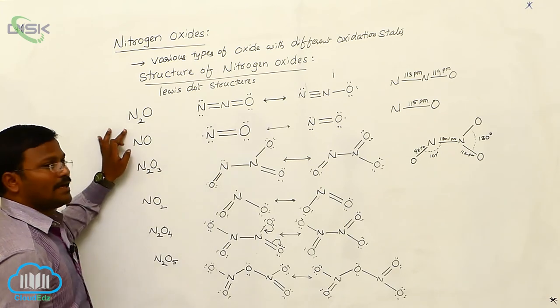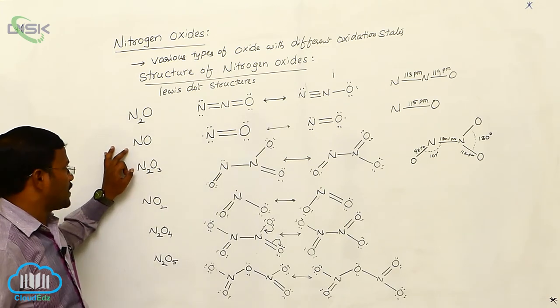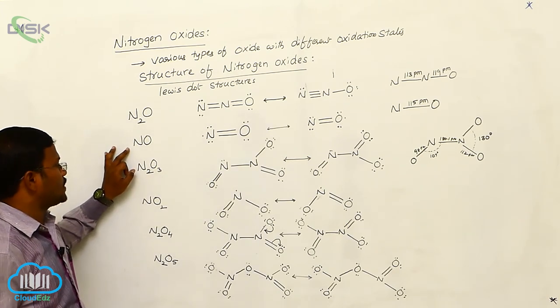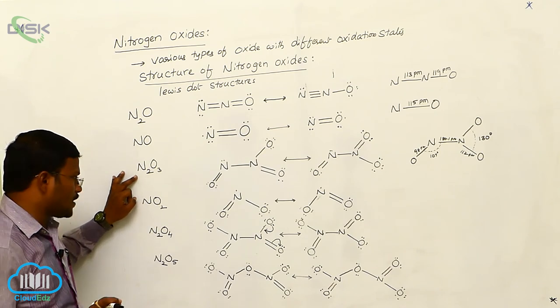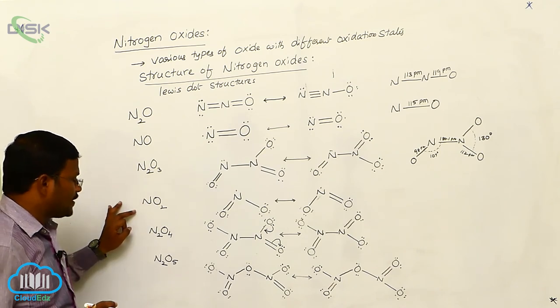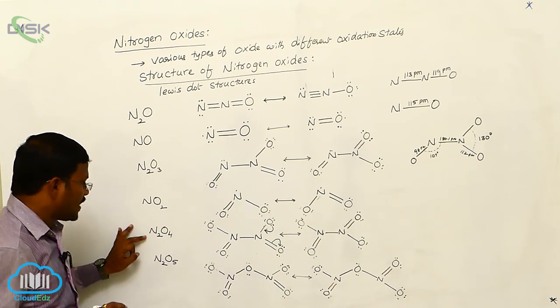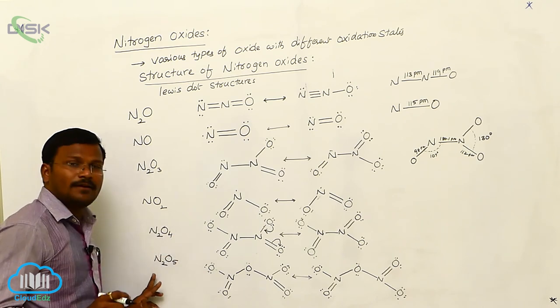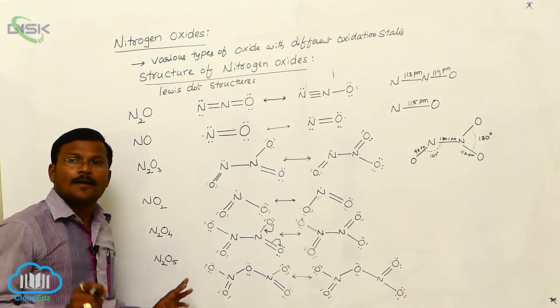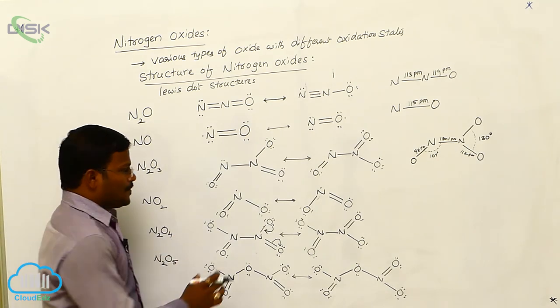In summary, the nitrogen oxides covered are: nitrous oxide (N₂O), nitric oxide (NO), dinitrogen trioxide (N₂O₃), nitrogen dioxide (NO₂), dinitrogen tetroxide (N₂O₄), and dinitrogen pentoxide (N₂O₅).